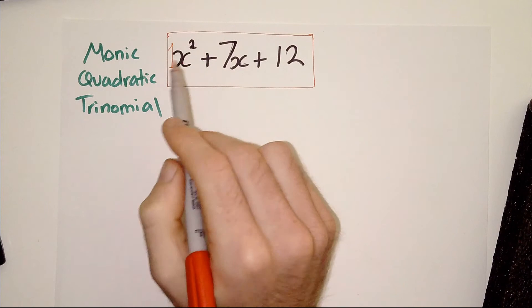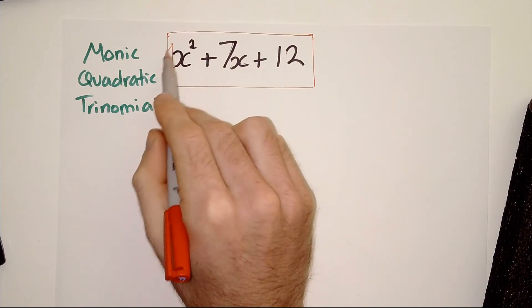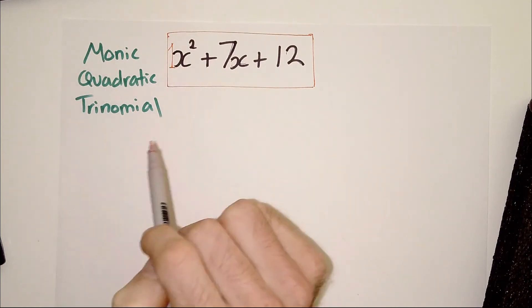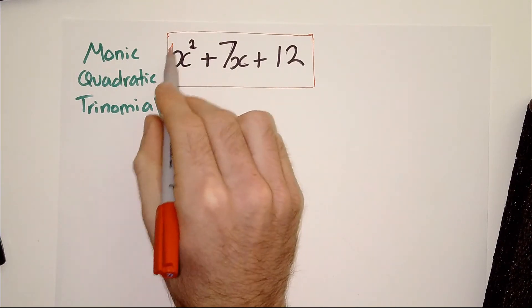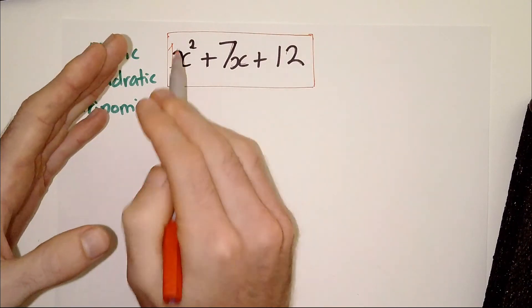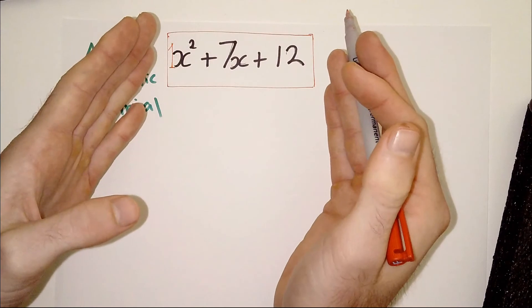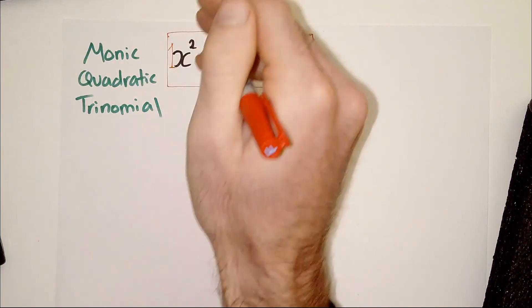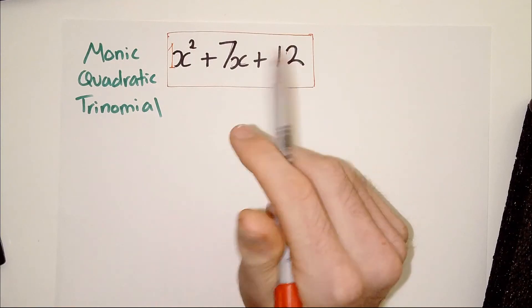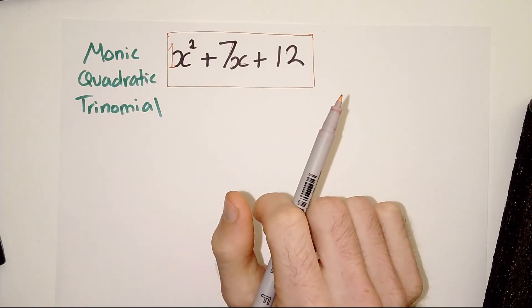It would be called a non-monic quadratic if there was a number other than 1, which you would have to show, such as 2 or 3. So, if it was 2x squared, this would be a non-monic quadratic. If it was a negative 1, so, or just negative x squared, what you would do is you would factorize the negative out so that all that you had left in the brackets was x squared again. So, the negative would be factorized out to leave you with a monic quadratic trinomial within the brackets. I'll do an example of that in another video.